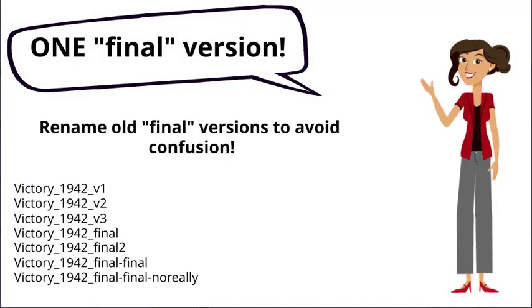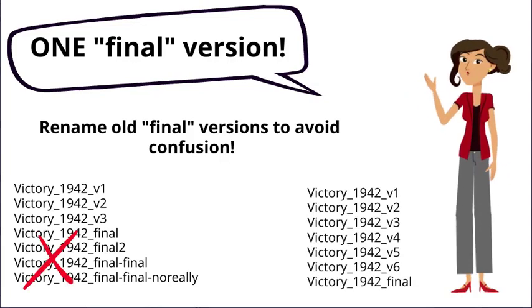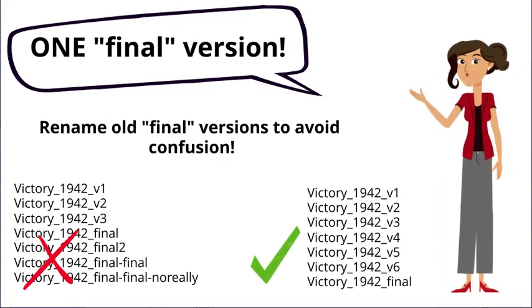Also, make sure you only have one final version of a particular data file at the end of the project. If you do have to revise what you'd hope was your final version, remove the word final from its name and update its version number. Only attach the word final to your last version, and even then only once you've finished with all your revisions.